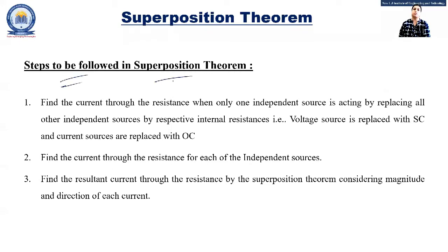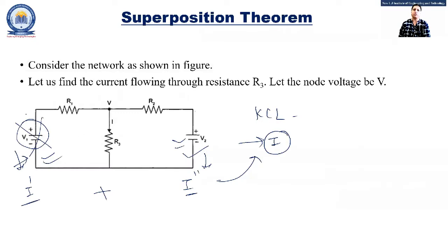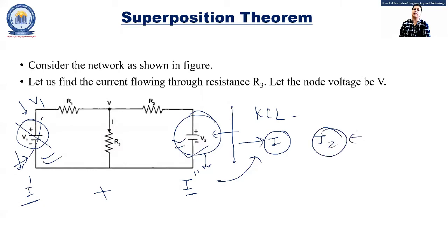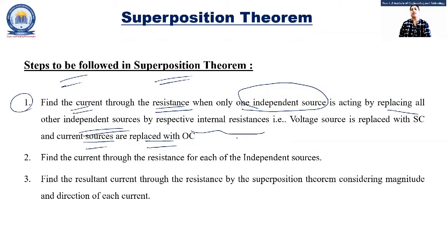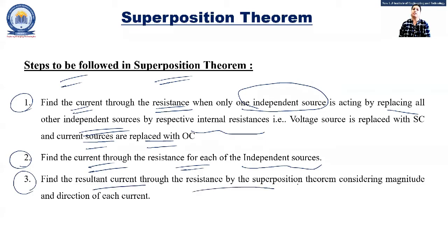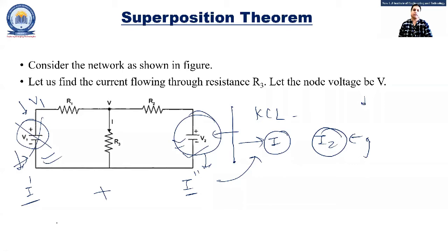The steps for the Superposition Theorem are: First, find the current through the resistance when only one independent source is acting — all other voltage sources are short-circuited and current sources are open-circuited. Second, find the current through the resistance for each individual independent source. Third, find the resultant current by adding all individual contributions together. We will now see a worked example of how this works.